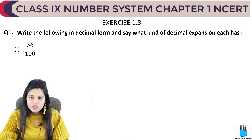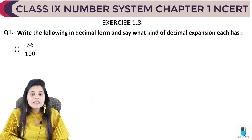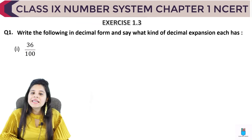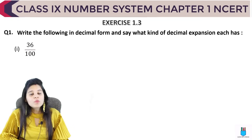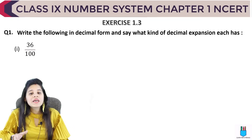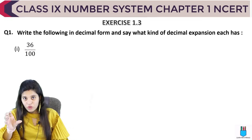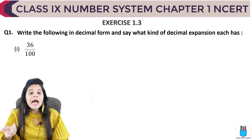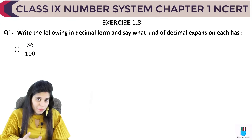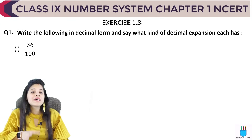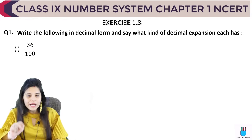Exercise 1.3 of Chapter 1 is to write the following fractions in decimal form and say what kind of decimal expansion each has. All the fractions are given and we have to write them in decimal form. Then we will tell what kind of decimal expansion each one is. Now there are two kinds of decimal expansion.